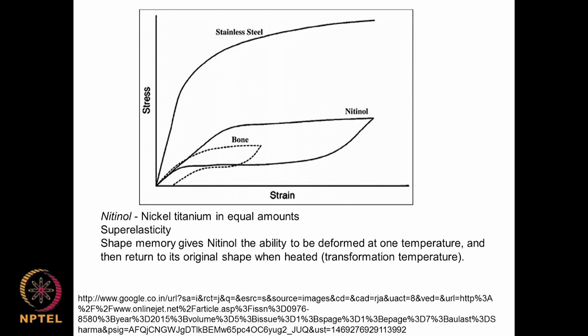Bone, as I said, is viscoelastic, so you may have graphs with a hysteresis type. There is a material made up of nickel-titanium, about 45% weight percent. It also exhibits viscoelastic behavior — when the strain is increased the stress goes up, and when the strain is removed the stress comes down but follows a different pathway. This material is called a shape memory material. The beauty is when it is deformed at one temperature and then you heat it up, it regains its old shape — it remembers its old shape. That is why it is called a shape memory material, and that temperature is called the transformation temperature.